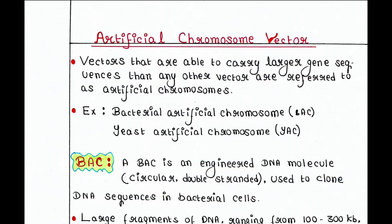In our last lecture we saw what artificial chromosome vectors are, and we saw that there are two types of artificial chromosome vectors. One is BAC or bacterial artificial chromosome, and the other one is YAC, yeast artificial chromosome. We already talked about BAC in our last lecture, and today we will talk about YAC.